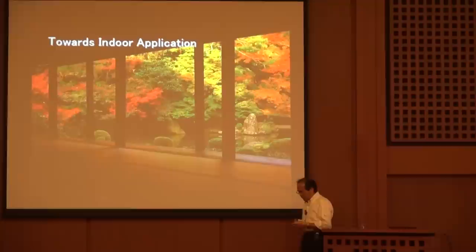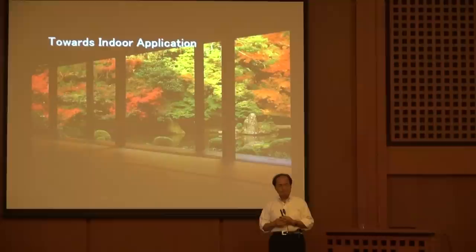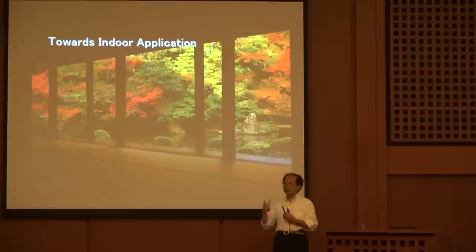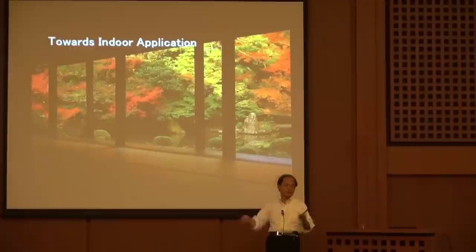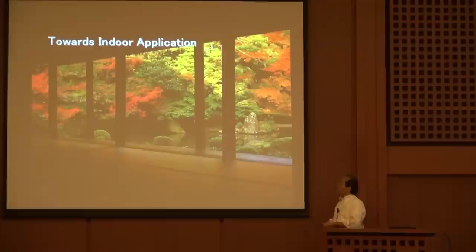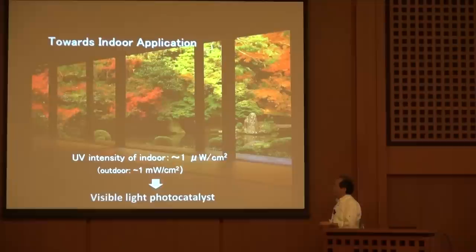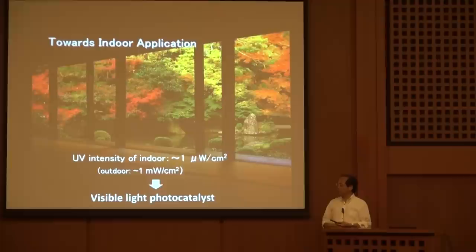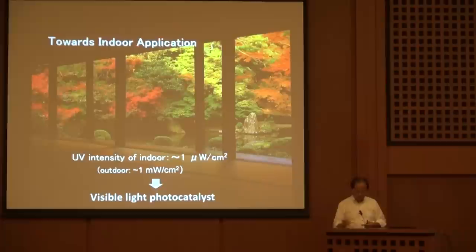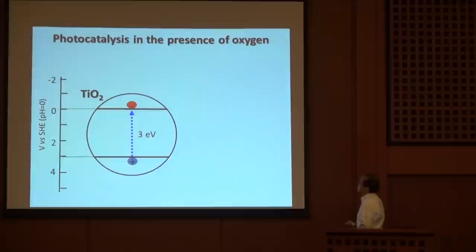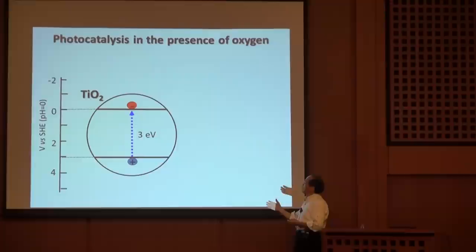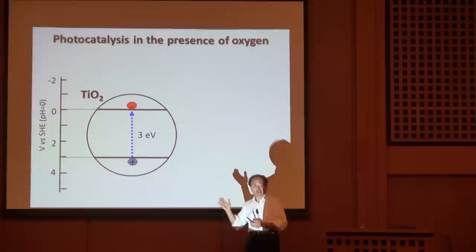So far we used UV light, and those materials I introduced were used only outdoors, because sunlight has a small amount of UV light, but that UV light is enough for two-dimensional surface reactions. But when we apply our materials to indoor materials, the UV light intensity indoors is three orders of magnitude weaker than outdoors. That's why it's not enough. So for indoor applications, we have to develop new materials that absorb visible light, not UV light. This is the first challenge: to develop titanium dioxide-based visible light-sensitive materials.